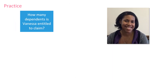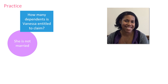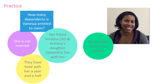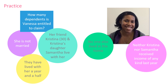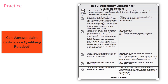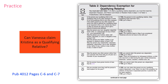Back to Vanessa. We already determined that her filing status is single, but how many dependents is Vanessa entitled to claim? Let's review her facts: her friend Christina and Christina's daughter Samantha have lived with her for a year and a half, and no one else lived in the home with them. Neither Christina nor Samantha received income of any kind last year, and Vanessa paid all the expenses for all of them. Vanessa and Christina are not related to each other. Let's start with Christina. Since she is over age 24, not totally and permanently disabled, and not related to Vanessa, she can't be a qualifying child. So we'll skip Table 1 and start with the test for qualifying relative on Table 2.